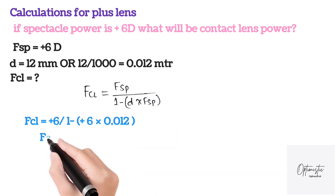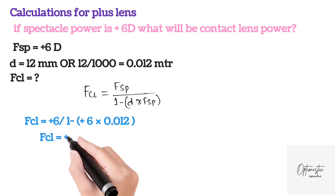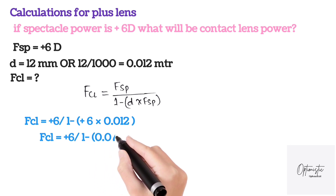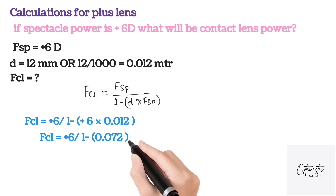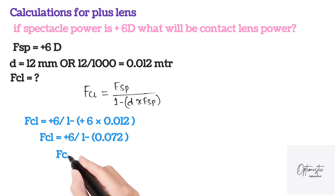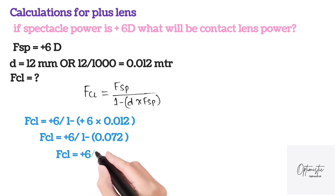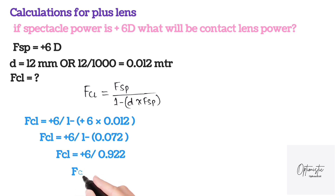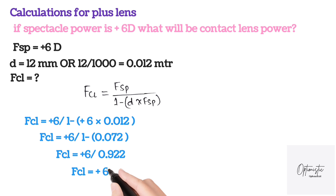Be sure to write the sign of the lens. In the next step, multiply plus 6 by 0.012 and you'll get 0.072. Then subtract 0.072 from 1 and you'll get 0.928. In the next step, divide 6 by 0.928 and you'll get approximately 6.50. So the contact lens plus power is more than the spectacle power.